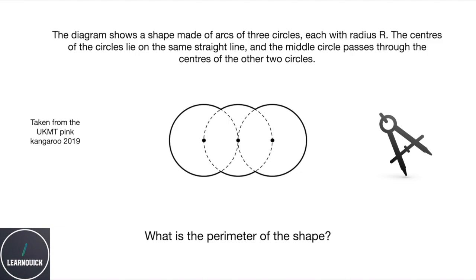The centres of the circles lie on the same straight line, and the middle circle passes through the centres of the other two circles. What is the perimeter of the shape?